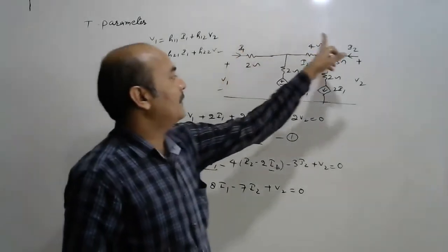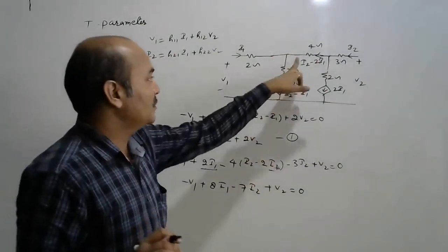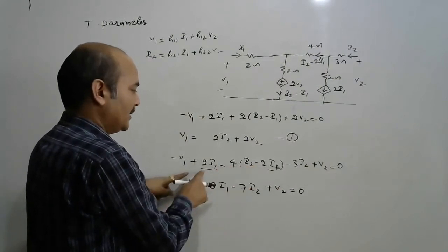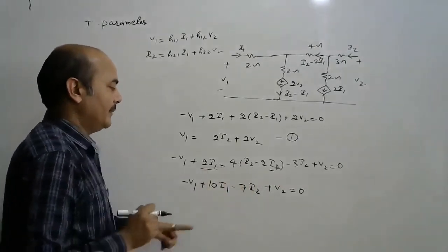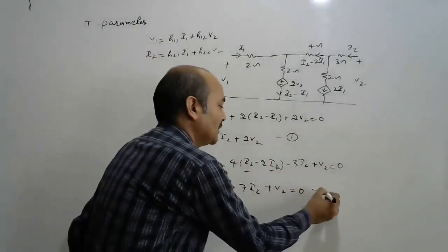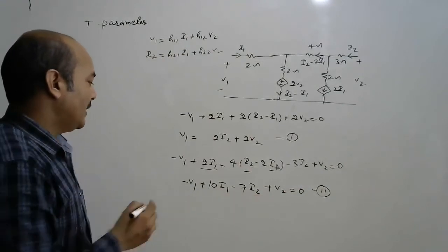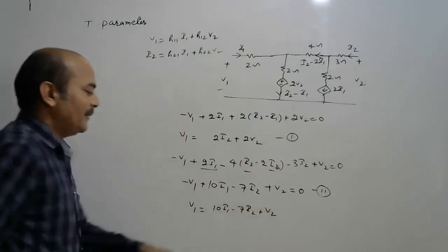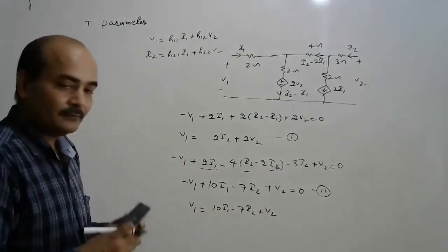We now need to express V1 as a function of I1 and V2 only, so we must eliminate I2. From equation 1, I2 = (V1 − 2·V2) / 2. We substitute this into equation 2: V1 = 10·I1 − 7·I2 + V2, replacing I2 with (V1 − 2·V2)/2.